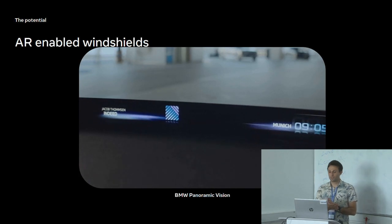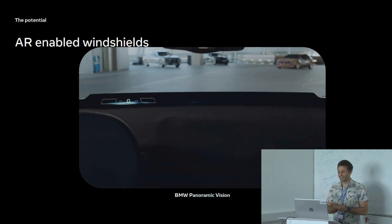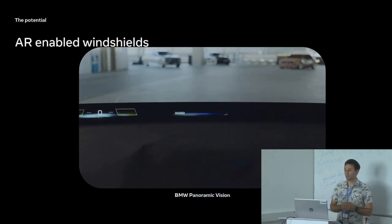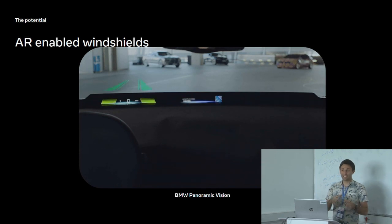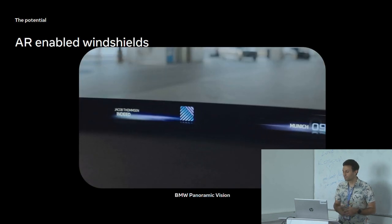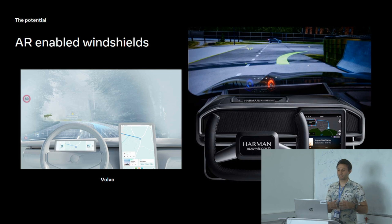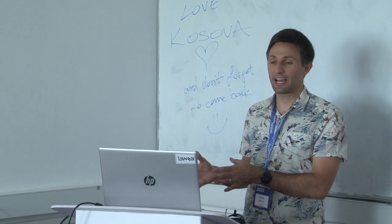Cars have potential for AR too. BMW is planning to release an AR-enabled windshield in the next couple of years — an overlay showing things like where your next turn is, a step up from a heads-up display. Companies like Volvo and Harman are looking at a windshield that's almost completely a display, interspersed with the real world, overlaying speed limits, hazard warnings like animals ahead, and upcoming turn indications — much safer because drivers don't need to look down at a map or get distracted by their phone.